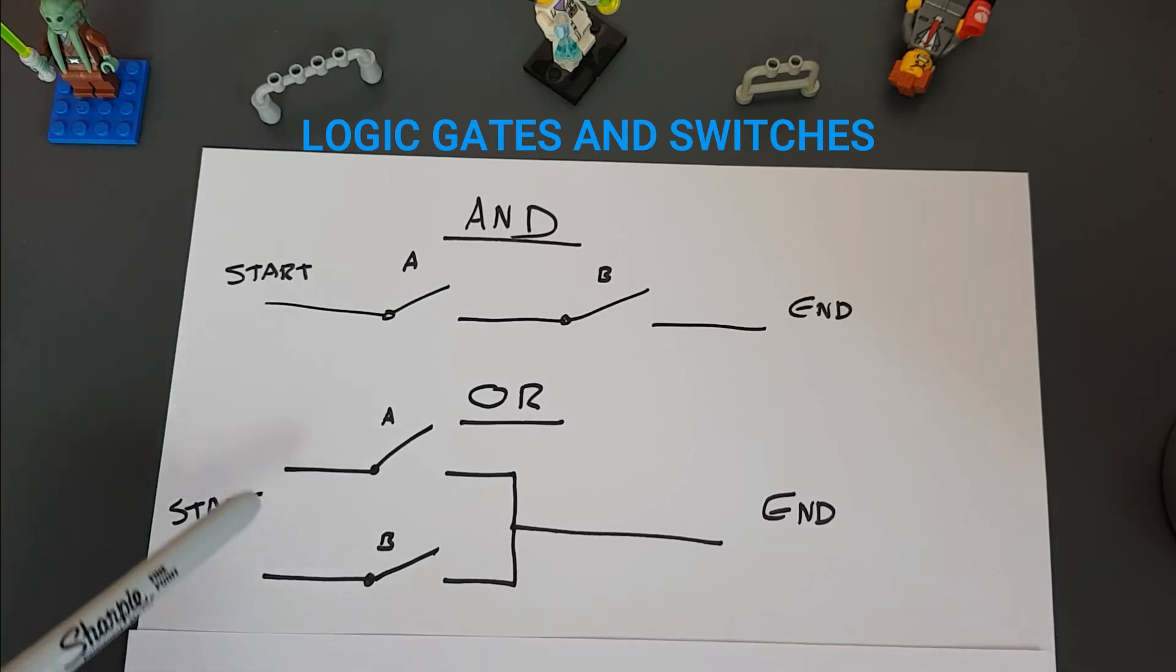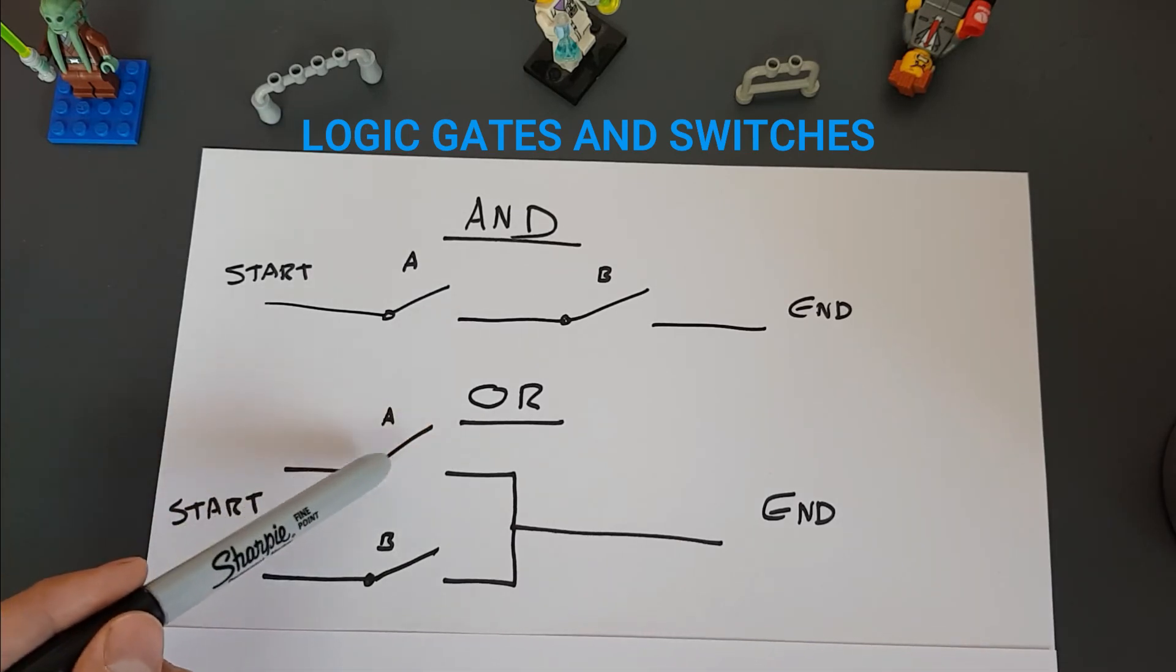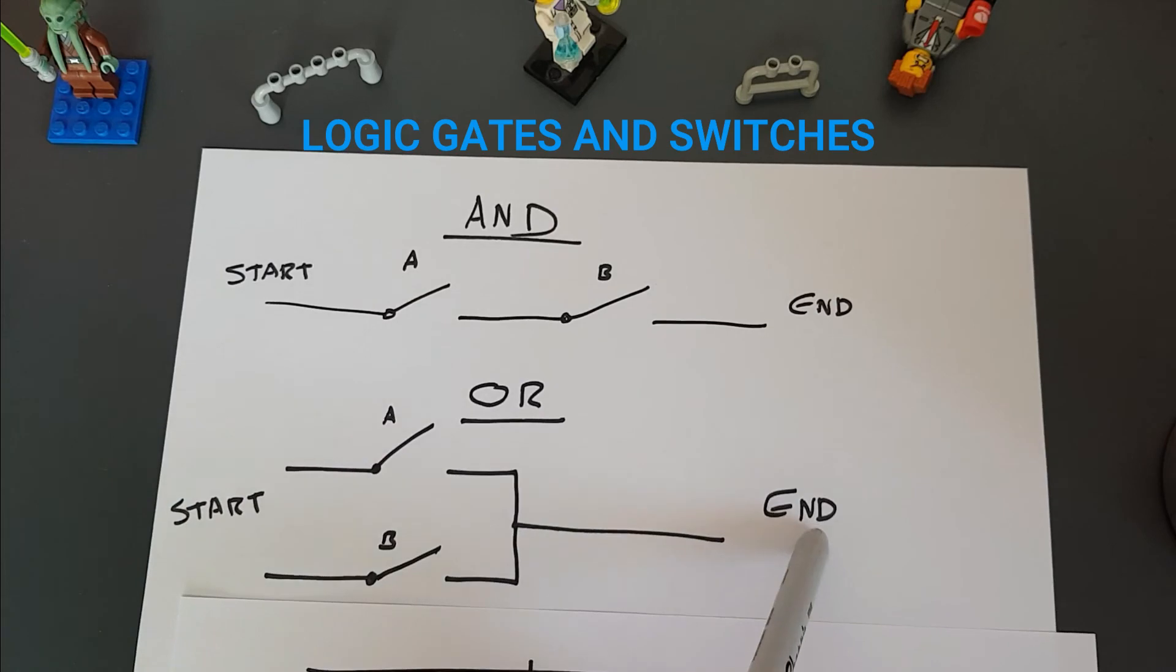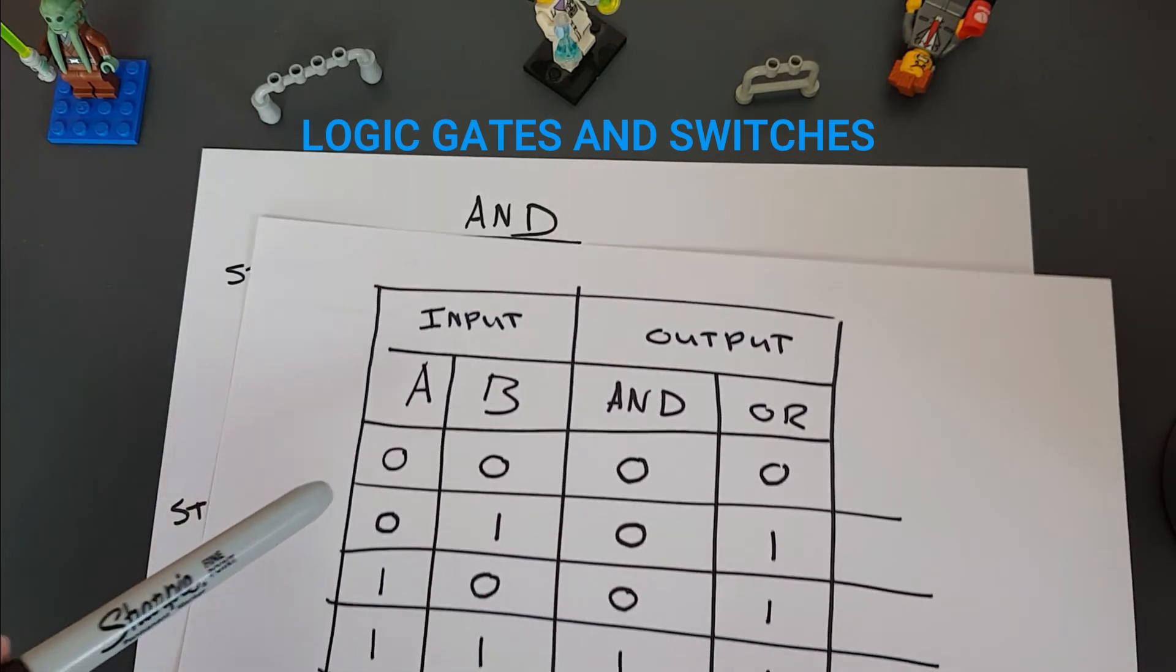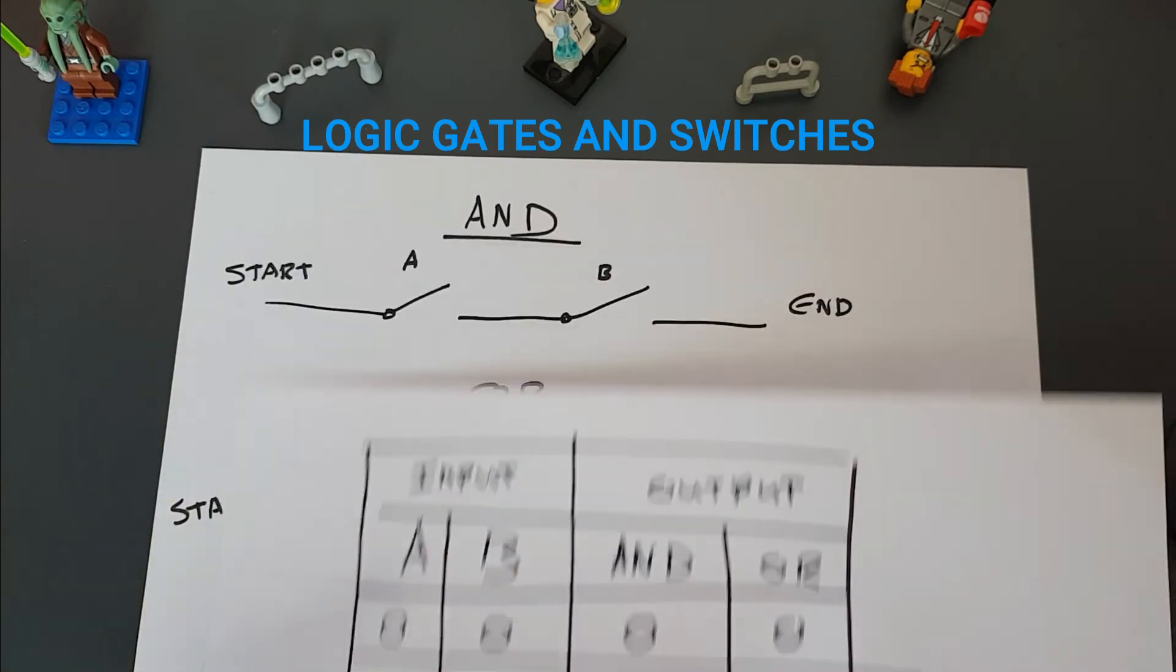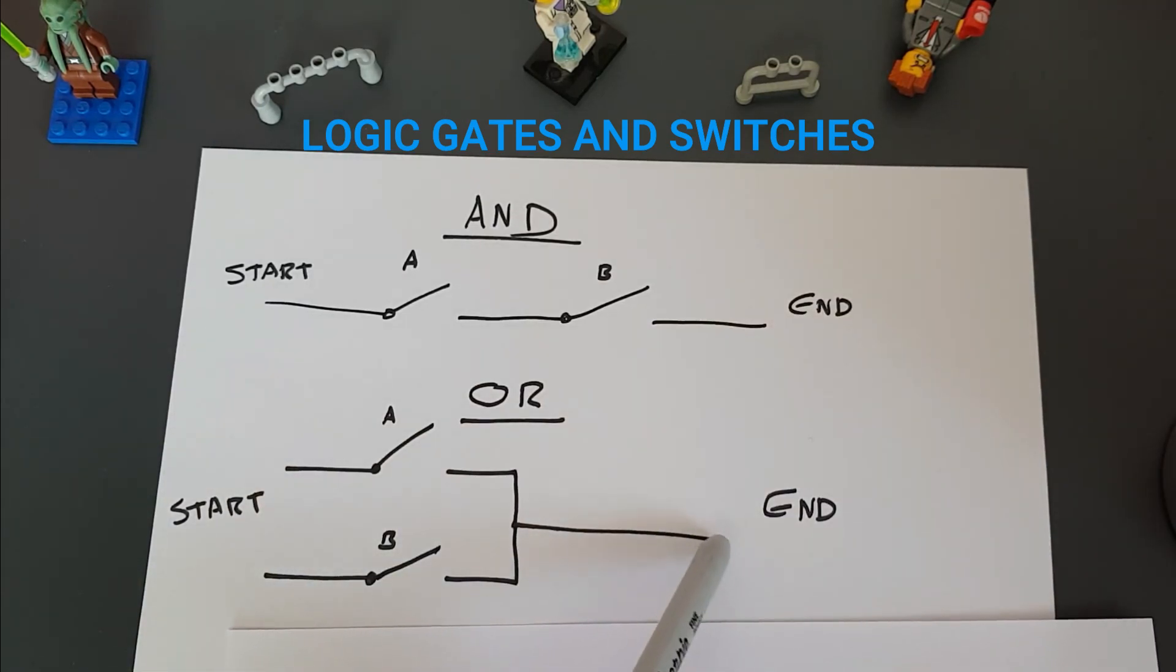On the OR side of things, we can see that if A is TRUE, then you can get from start to end. If B is TRUE, you can get from start to end. And if both A and B are TRUE, you can get from start to end. But if both A and B are NOT TRUE, then OR doesn't work either.